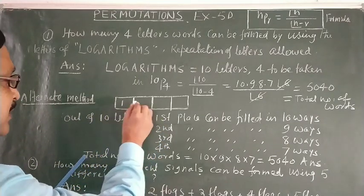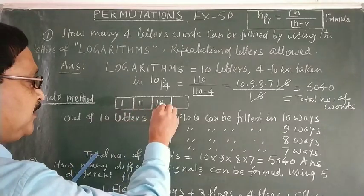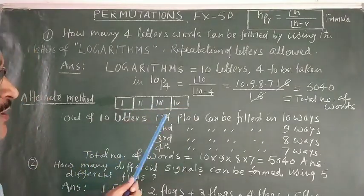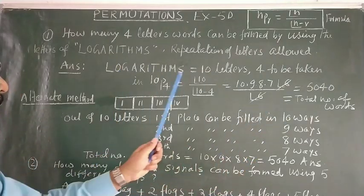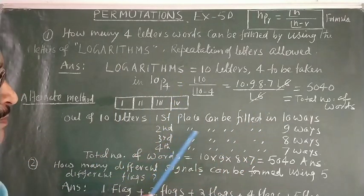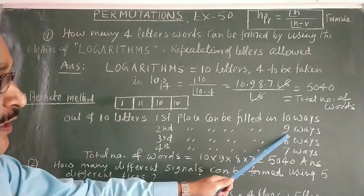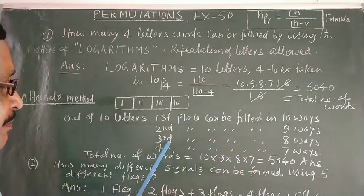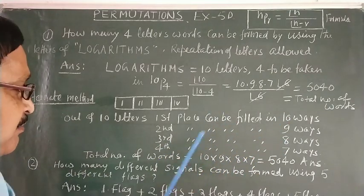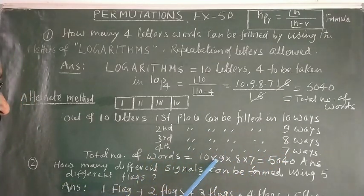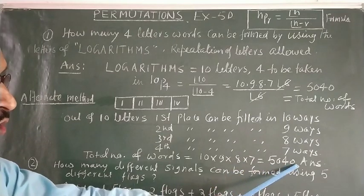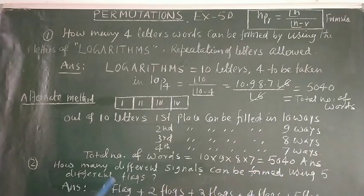In the alternate method: the first place can be filled in 10 ways because we have 10 letters. The second place can be filled in 9 ways (one letter used), the third place in 8 ways, and the fourth place in 7 ways. So the total number of words = 10 × 9 × 8 × 7 = 5040.